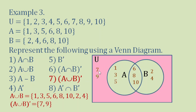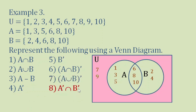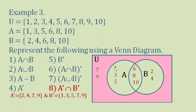So the elements of (A union B) prime are 7 and 9. Number 8: A prime intersection B prime. A prime gives us 2, 4, 7, 9. B prime gives us 1, 3, 5, 7, 9. The common elements between A prime and B prime are 7 and 9.